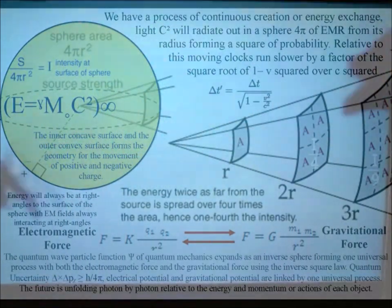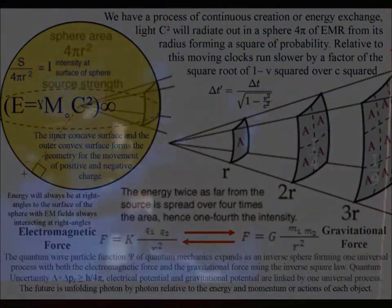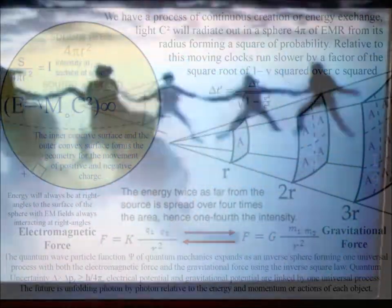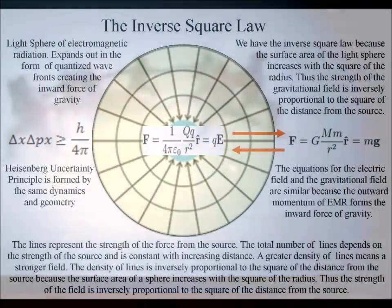We have one universal process that begins with the quantum wave particle function or probability function of quantum mechanics, expanding out as an inverse sphere and ends with the inverse square law of gravity.